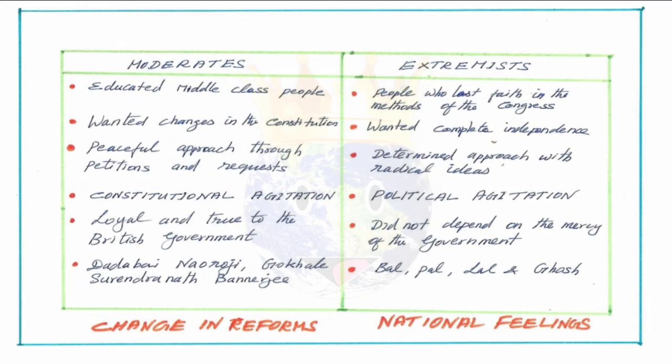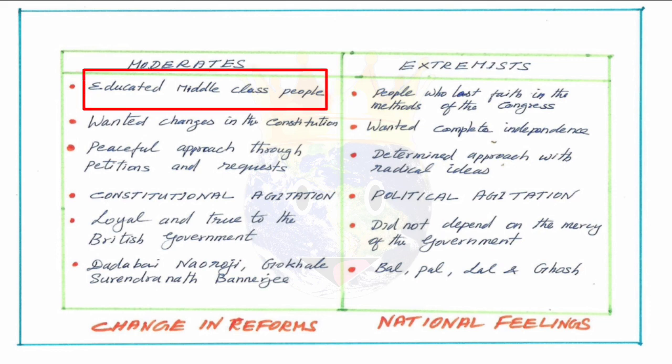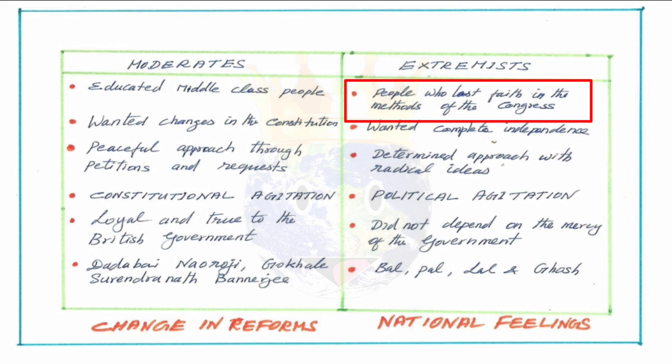An important aspect is that the Indian National Congress had two clusters of people — moderates and extremists. The moderates were educated middle-class people. The extremists were also part of the INC, but they had lost faith in the methods of Congress — whatever Congress was doing, the approaches it adopted — and they wanted to deal with the process in a very different way.